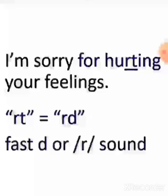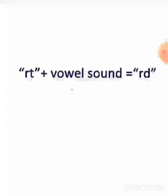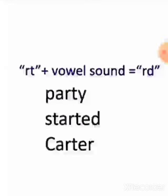When pronouncing 'hurting,' you will have to change the T sound to a D sound. Like hurting — hurting. In American English accent, when a vowel and a T sound are combined, we change the T to a D sound. So it would be 'party' like party, 'started,' 'quarter' — not quarter or party or started, but party, started, quarter.